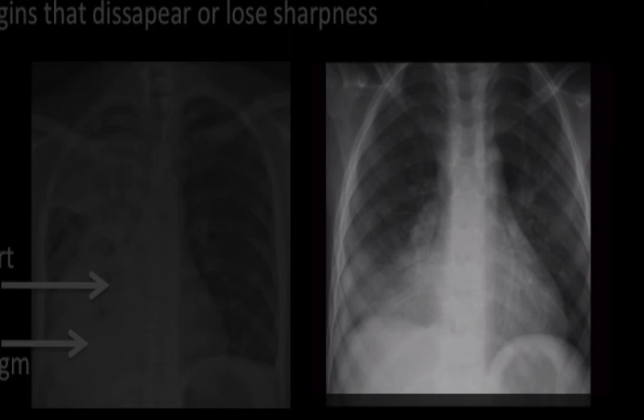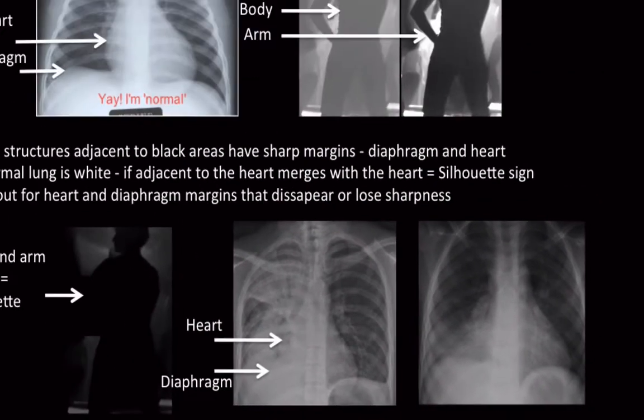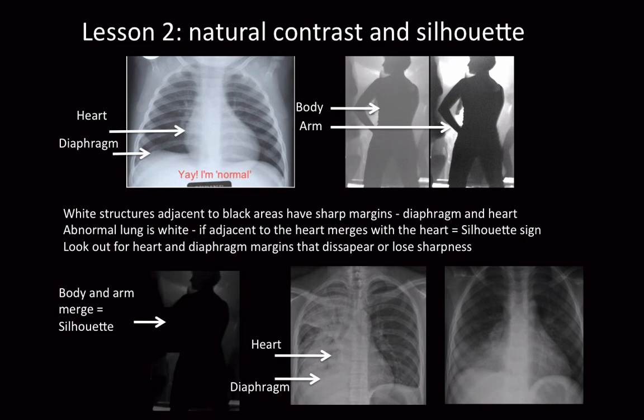So the lesson is this: if the cardiac margin is indistinct, irregular, or missing, then there is adjacent disease in the lung — this is the silhouette sign. Always look at the cardiac margins and the diaphragms and make sure you can draw their outline throughout their entire length with a pencil.